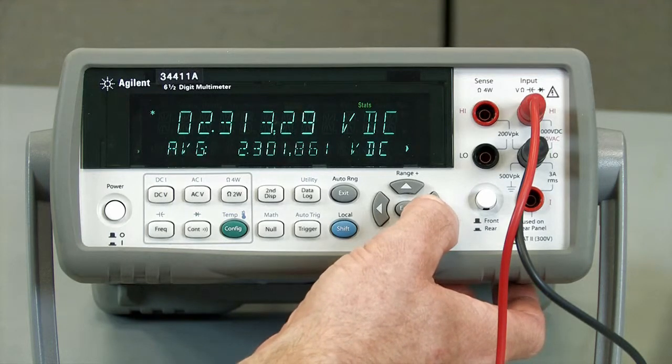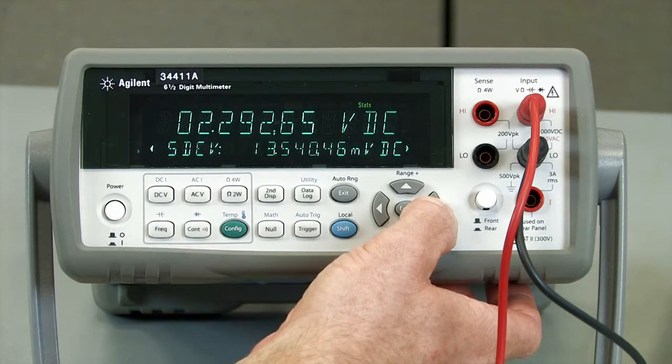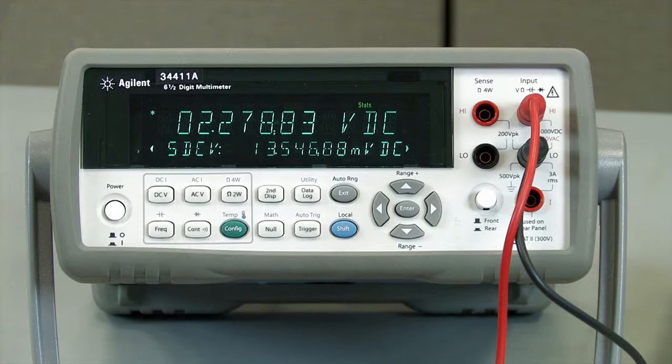And again, let's go ahead and look at our standard deviation now. So as you can see the standard deviation has been greatly reduced from the 78 millivolts we saw earlier to less than 20 millivolts DC using this method.